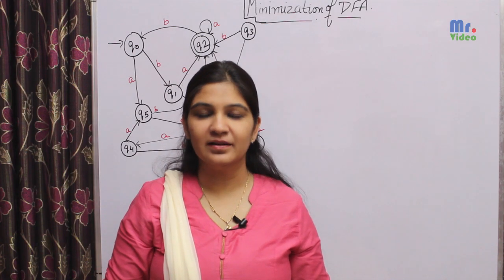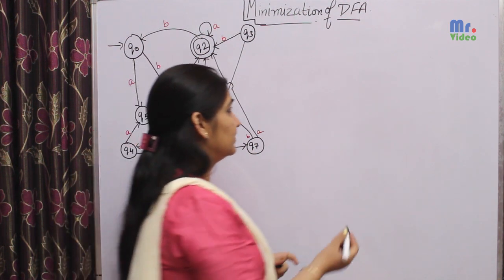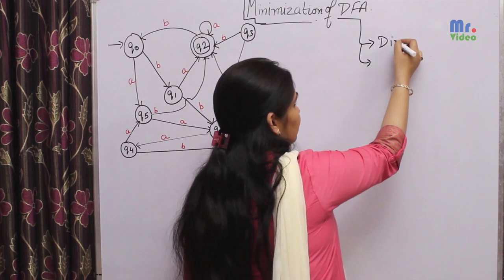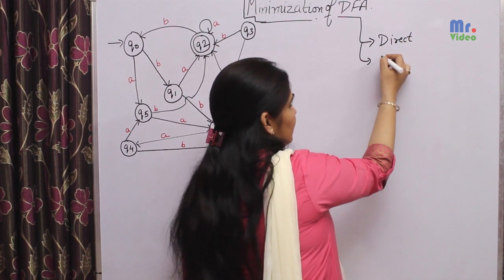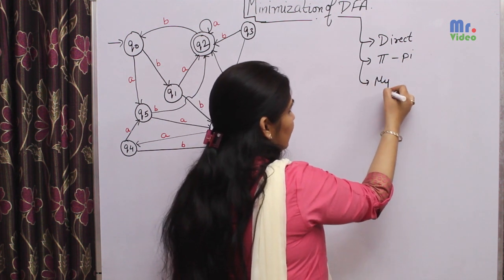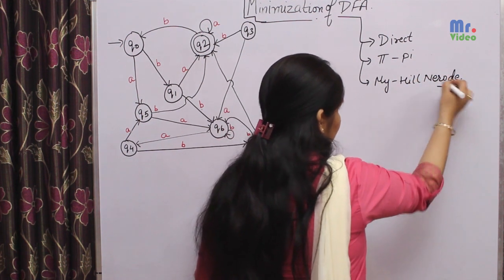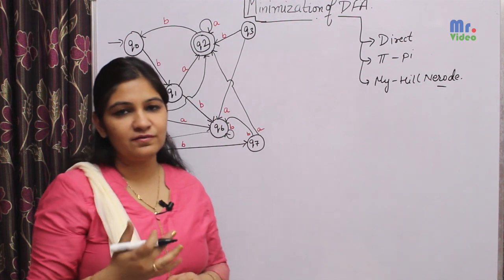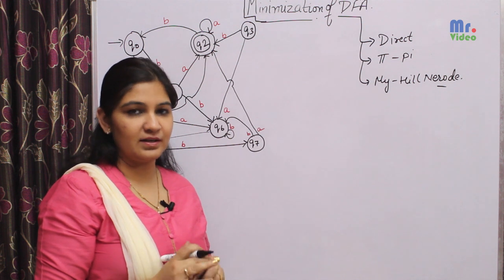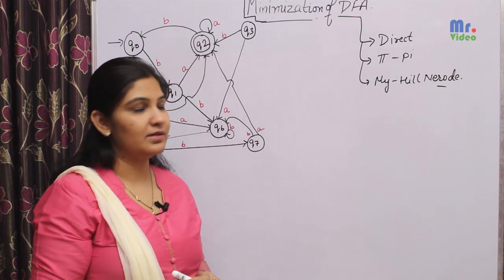Today we will be discussing the topic minimization of DFA. There are basically three methods to minimize or reduce a DFA. First one is the direct method, second one is the PI method, and the third one is the Myhill-Nerode theorem, which is used to reduce the given DFA. You can use any of the three methods for the reduction unless it is not specified in the given question that you have to do the reduction by using a particular method only.